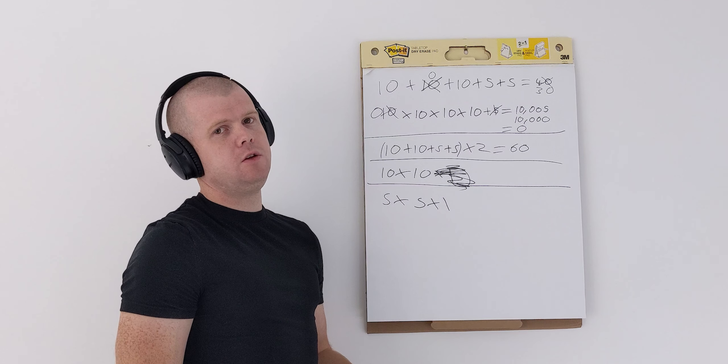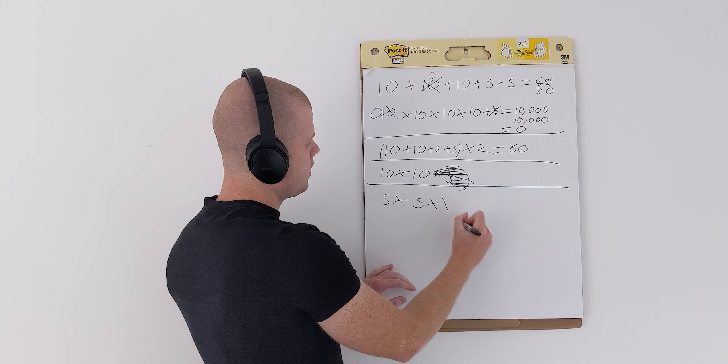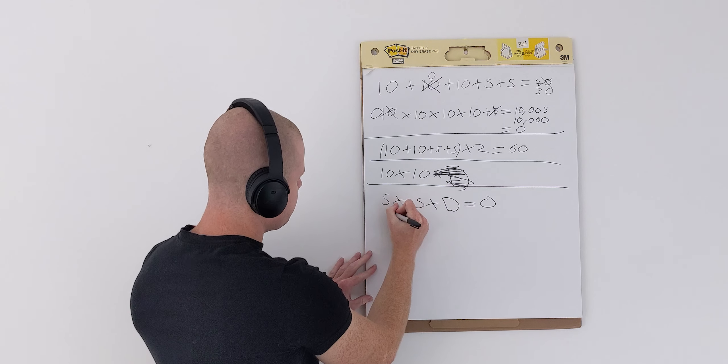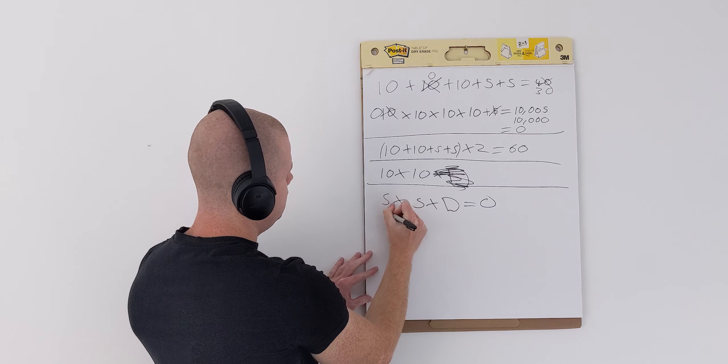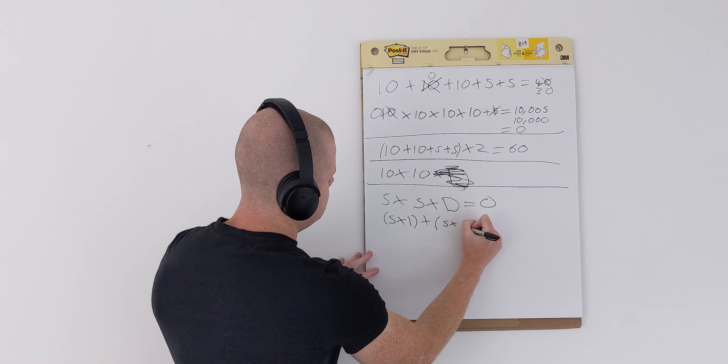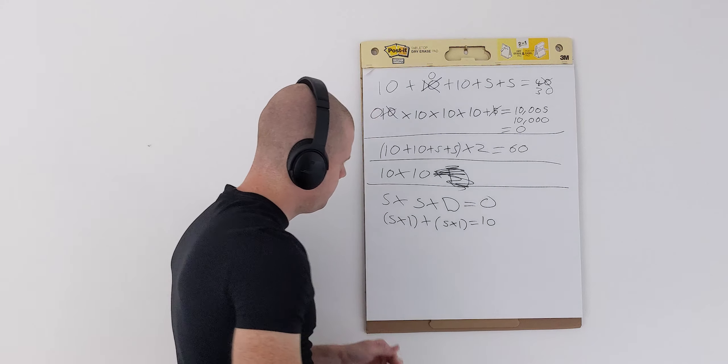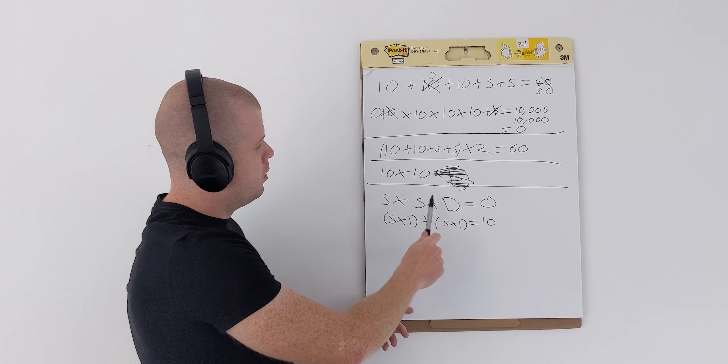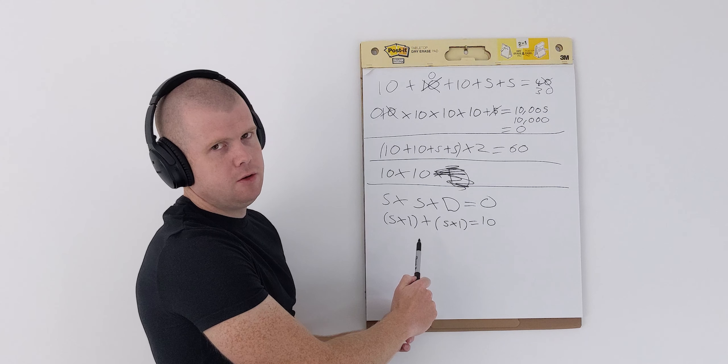But what if we had two servers to compartmentalize risk? So, instead of this becoming a 0 and then the whole thing becoming a 0, we have 5 times 1 plus 5 times 1 equals 10. Previously, if our one server failed, we would go to 0. But in this situation, we've now got two servers. We have a server for a front-end and a server for a back-end.